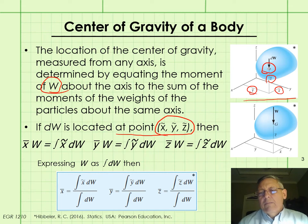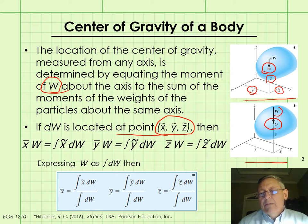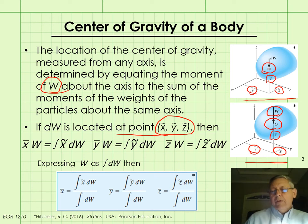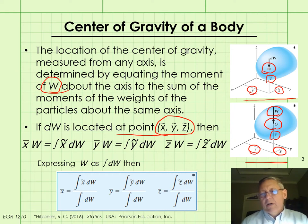Our center of gravity in figure 2 is located at G. The total weight of the body — which is the summation of all those differential weights dW — is represented as force W acting through G. G is located at coordinates shown with a line over the letter, read as X-bar, Y-bar, Z-bar.